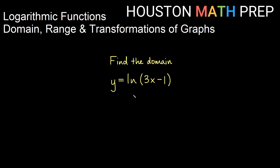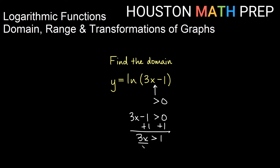Let's look at another one. We have y equals natural log — that's log base e — of 3x minus 1. Remember this thing inside the logarithm just needs to be positive, greater than 0. So we say 3x minus 1 needs to be greater than 0. First we add 1 to both sides to get 3x is greater than 1. Then divide both sides by 3, and we get that our domain is x needs to be greater than 1 third.